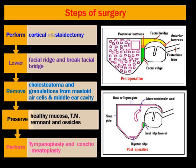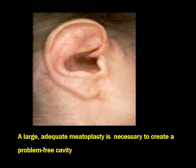The steps: first, perform cortical mastoidectomy. The facial ridge and the facial recess are addressed. Remove the cholesteatoma and granulation tissue from the mastoid cells and middle ear cavity — whatever disease is present must be removed — while preserving the healthy mucosa, tympanic membrane remnant, and ossicles. We have to perform tympanoplasty and meatoplasty. If we do tympanoplasty, the patient's hearing may come to around 30 to 35 decibels. An adequate meatoplasty is necessary to create a problem-free cavity.